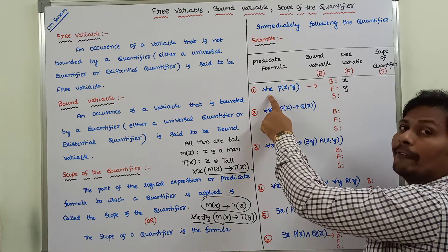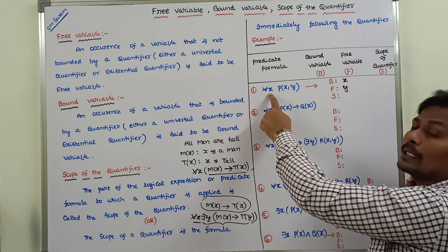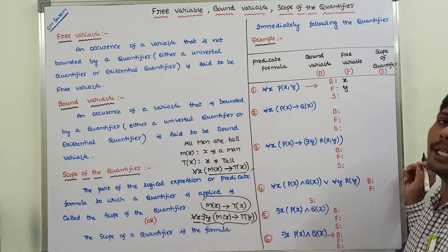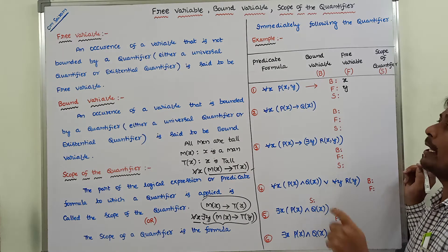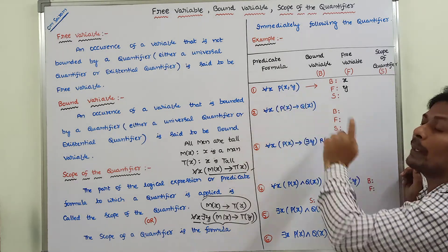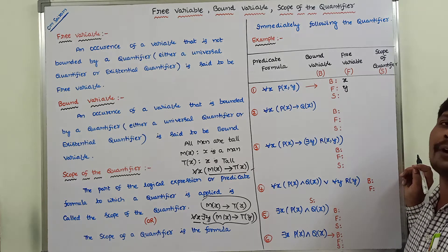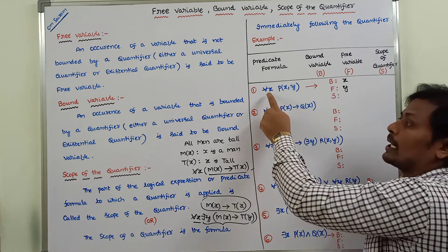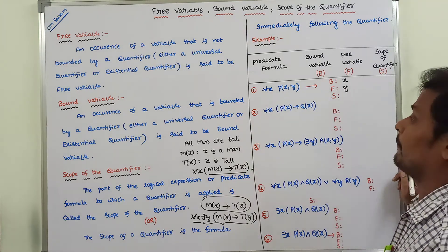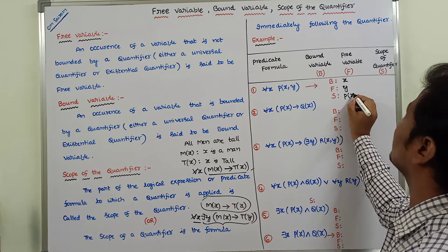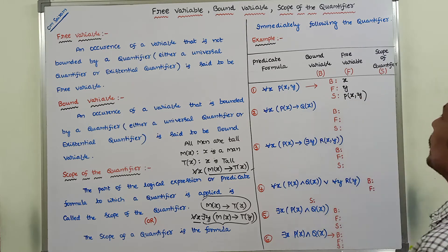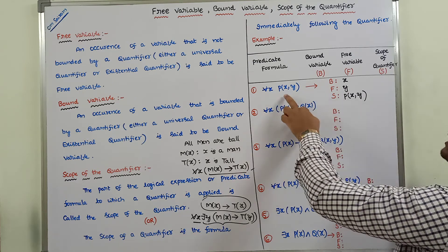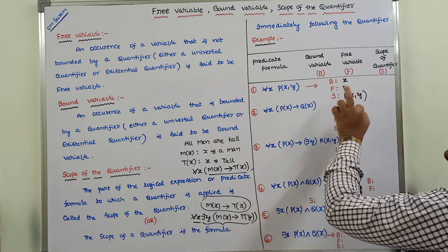The scope of the quantifier means the predicate formula immediately following the universal quantifier. After the universal quantifier, the predicate formula is P(x, y), so P(x, y) is treated as the scope of the universal quantifier. So for this statement: bounded variable is x, free variable is y, and scope of the quantifier is P(x, y).